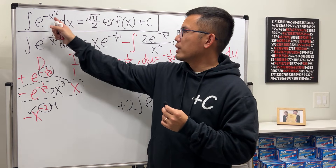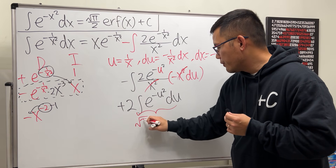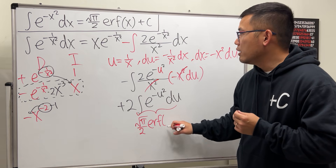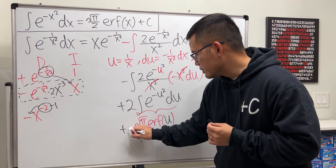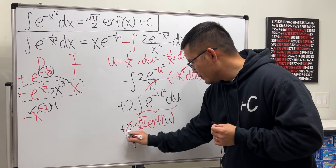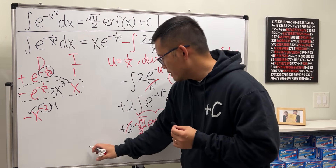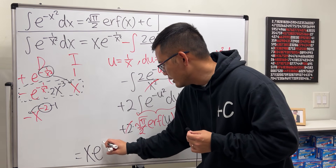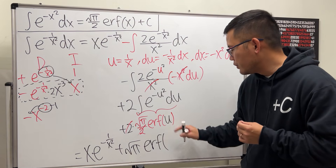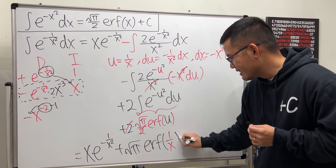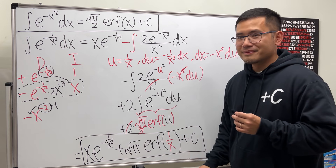This matches the Gaussian integral form. Integrating e to the negative u squared gives square root of pi over 2 times the error function erf(u). Don't worry about the plus c yet — do that at the very end. We have plus 2 times square root of pi over 2 times erf(u): the 2s cancel nicely. Then we substitute u = 1/x back. The final answer is x·e to the negative 1 over x squared, plus square root of pi times erf(1/x), plus c.